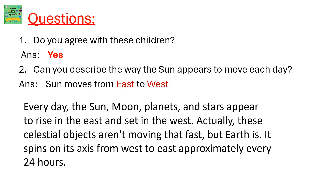Questions: do you agree with these children? Can you describe the way the sun appears to move each day? The sun moves from east to west every day. The sun, moon, planets, and stars appear to rise in the east and set in the west.